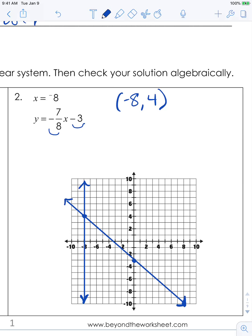Obviously, it makes x equals negative 8 correct. So let's substitute into the second equation. We're going to have 4 is equal to negative 7/8 times negative 8 minus 3.